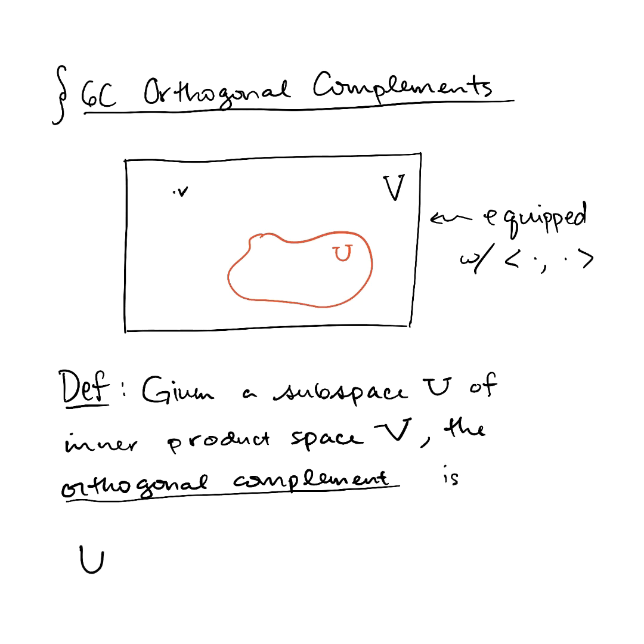Here's how you denote it. So you write down U and then you superscript it with this perpendicularity symbol and that total symbol there, U along with the superscript, that's actually pronounced U-perp. So we say U-perp. So the orthogonal complement is U-perp and its definition is, it's all the V's in big V such that <v,u> comes out zero for all vectors u in U. In other words, U-perp is all the vectors perpendicular to every vector in U.